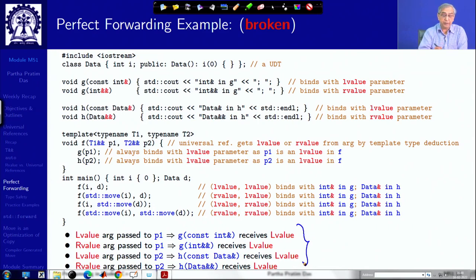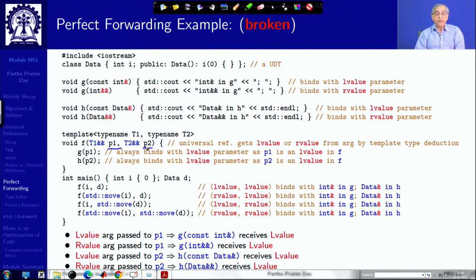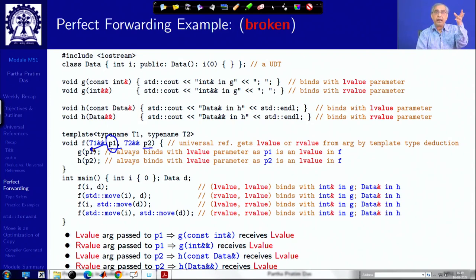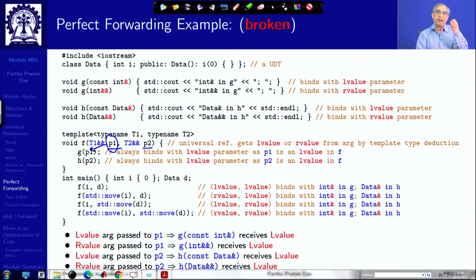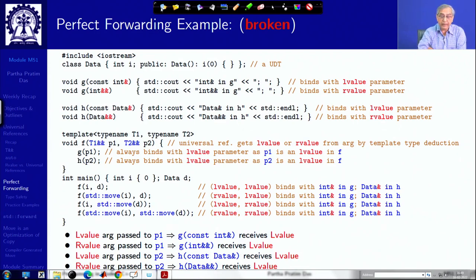Why is this happening? The reason is very simple: when I get parameter p1 or p2, p1 is a name — it is a named parameter. So when I pass p1, irrespective of the fact that it was received possibly as an R value, the sheer fact that it has a name makes the compiler deduce p1 as an L value. It forgets that it was an R value. So it does not matter whether p1 was received as L value or R value — having a name makes it an L value, and that is why this forwarding solution gets broken.